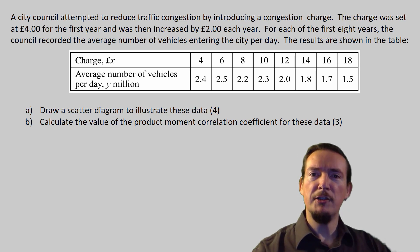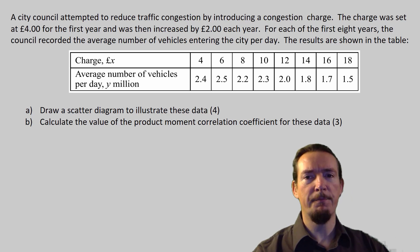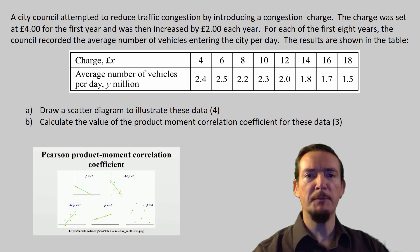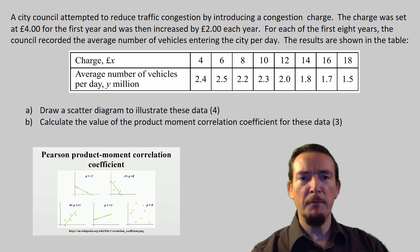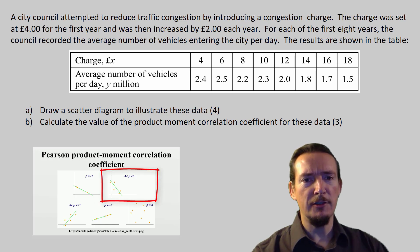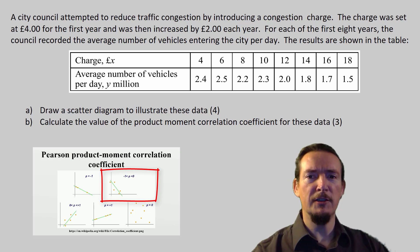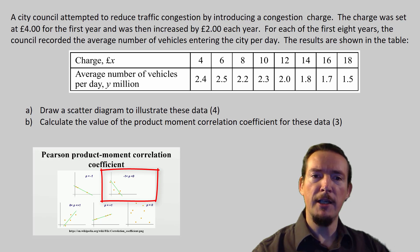It is always important to read the question carefully as the context can give strong clues to the expected answer. In this case, we would expect to find that as the Council increased the charge, the number of vehicles entering the city would fall. This would imply a strong negative value for PMCC, and so if our calculation doesn't show us this, it should alert us to the fact we've made a mistake somewhere along the line, and we should probably go back and check it.